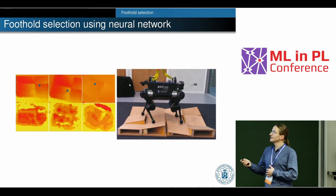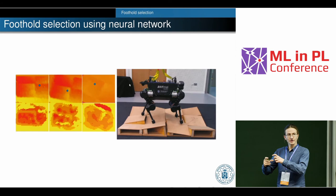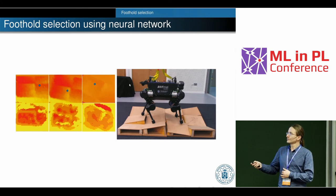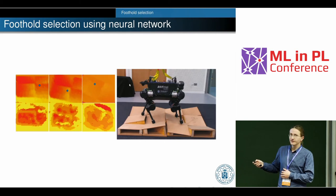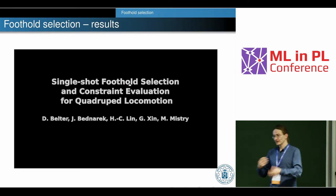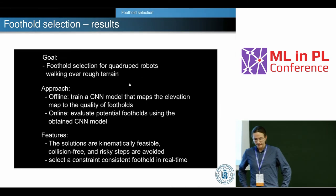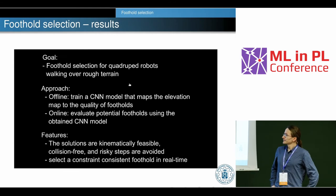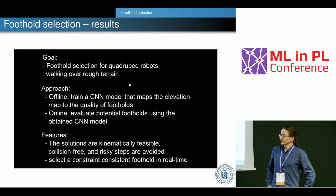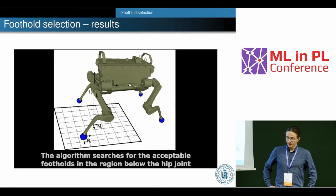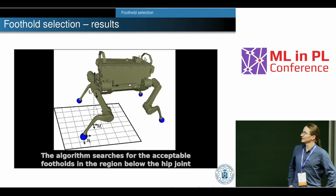The input to the neural network is the patch around the nominal foothold. The output is a cost map for the input elevation map, from which we select the best position for the foot. We do this continuously as the robot walks on rough terrain. Here is a video demonstrating the method — we have the local elevation map and the network produces the cost map.